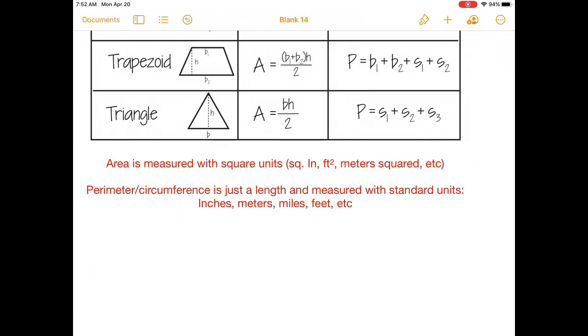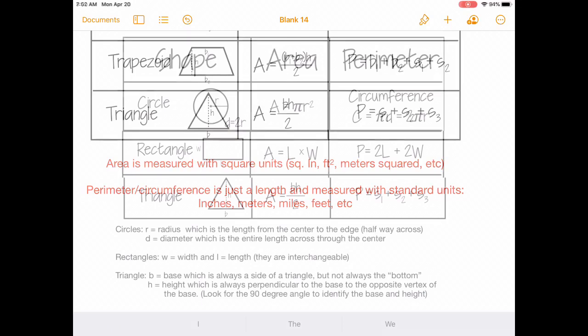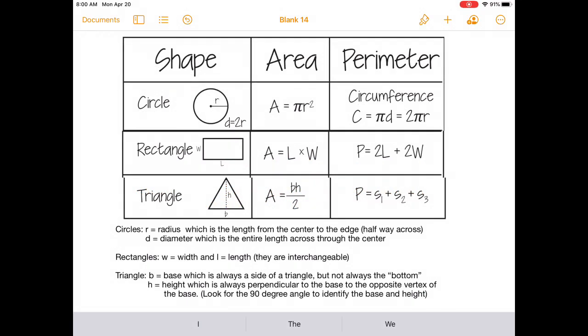For perimeter and circumference, it's really just a length, so it's measured with a standard unit, so it's just inches, meters, miles, feet, or any abbreviations of those. So don't worry, we're not going to use all of these formulas to start off with. We're going to stick with three basic ones, circles, rectangles, and triangles.